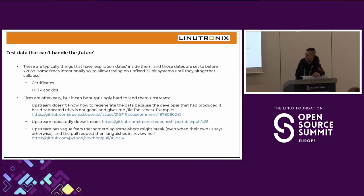Test data that can't handle the future typically involves test certificates and HTTP cookies with hard-coded dates — things like 'this ends in 2030.' This is easy to fix but not always easy to get upstream to merge. Sometimes upstream has certificates but doesn't know how to regenerate them because the developer who supplied them has disappeared and there is no script to regenerate them. That's the situation we have with OpenSSL — a fairly important project.